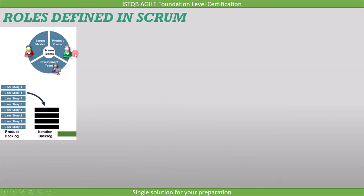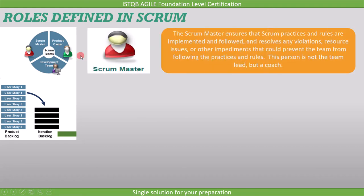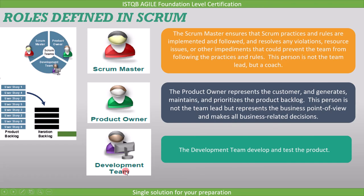Now let's see the roles defined in Scrum. There are three roles: Scrum Master, Product Owner, and Development Team. The Scrum Master ensures that Scrum practices and rules are implemented and followed, and resolves any violations, resource issues, or other impediments that could prevent the team from following the practices and rules. This person is not the team lead, but a coach. The Product Owner represents the customer and generates, maintains, and prioritizes the product backlog. This person is not the team lead, but represents the business point of view and makes all business-related decisions. The Development Team develops and tests the product.